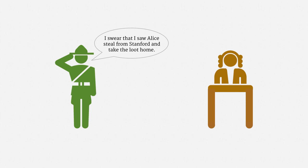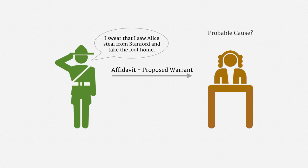To get a warrant, an officer tells a judge why they believe probable cause is satisfied. Let's suppose Peter swears that he saw Alice steal from Stanford and take the loot home. To get a search warrant for the loot in Alice's home, the officer will usually write up an affidavit and a proposed warrant. Many jurisdictions also allow for hearing warrant applications by phone and have a judge on duty at all hours, so the warrant process can be fairly informal and can happen very quickly. The judge then needs to decide whether the warrant application has demonstrated probable cause and whether the warrant would be sufficiently particular.